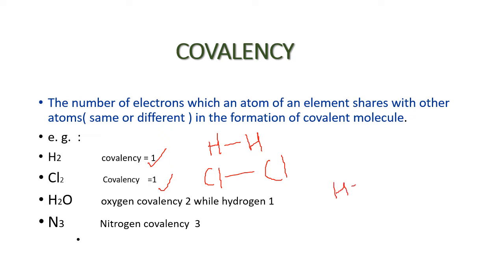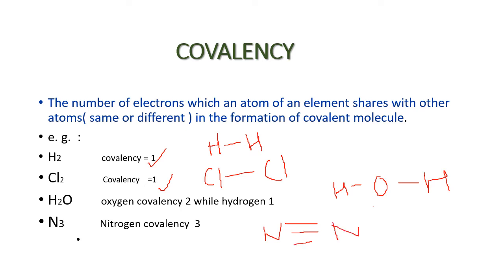In case of water, you can see oxygen forms a single bond with hydrogen. Oxygen is sharing two of its electrons — one electron with one hydrogen and a second electron with the second hydrogen. So the covalency of oxygen is two because it shares two of its electrons, whereas the covalency of hydrogen is one. In case of nitrogen molecule, one nitrogen atom can share three of its electrons with the next nitrogen atom. As there are three electrons being shared by one nitrogen atom, the covalency of nitrogen is three, or we can say nitrogen is trivalent in nature.